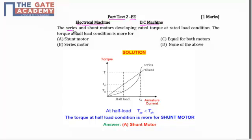The question is: series and shunt motors are developing rated torque at rated load conditions. It is asked that the torque at half load condition is more for - four options are given.